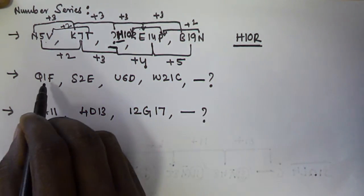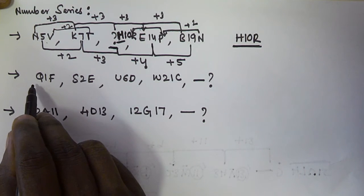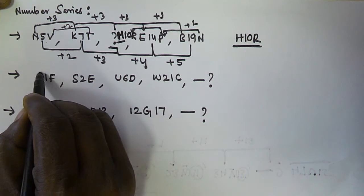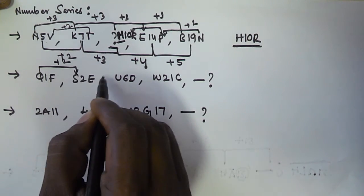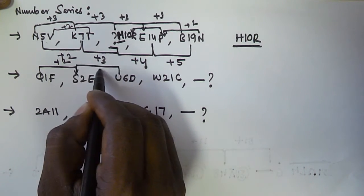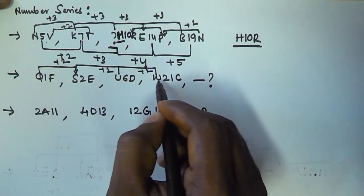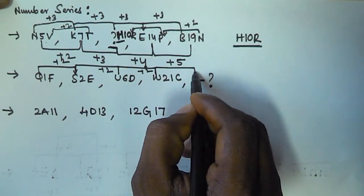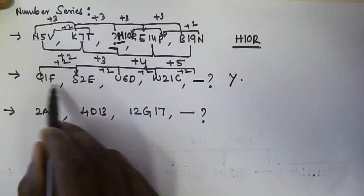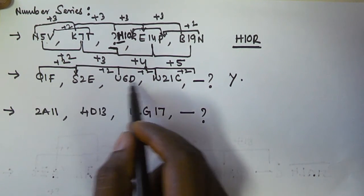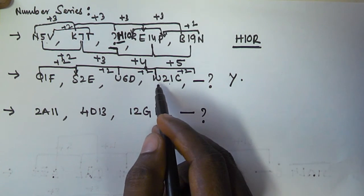Now for Problem 2, looking at the letters from left to right: P, Q, R, S — plus 2 each time. Then S, T, U — plus 2. Then U, V, W — plus 2. Then W, X, Y — plus 2. So the first letter of the answer is Y. For the numbers we have 1, 2, 6, and 21.